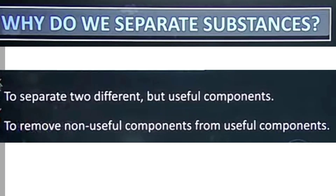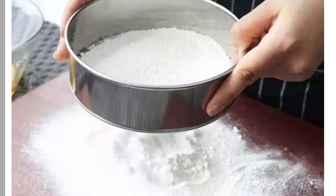First point: why do we separate substances? What is the need to separate substances? The first reason is to separate two different but useful components. When we separate two different components, both components are useful and have different uses. For example, wheat flour sieving — when we sieve the wheat flour, we get fine wheat and the bran. Fine wheat is a useful component, and bran is also used in the north side of India.